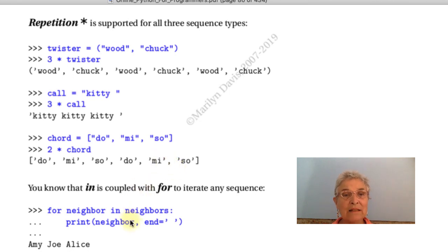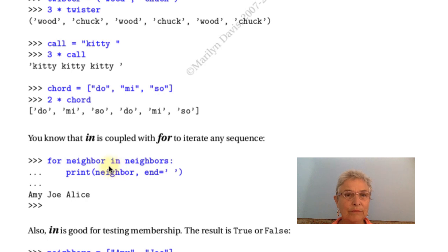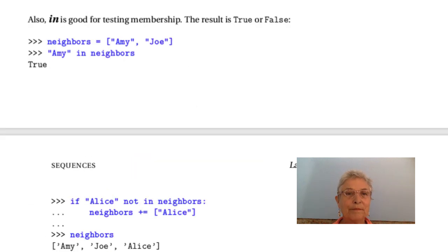We have seen, for many times, since almost the beginning, that for and in work together to take you through a sequence. For neighbor in neighbors, we print our neighbor. At this, we don't know. Is that a tuple? Or is that a list? All we know is that we're printing out one element at a time. These neighbors are definitely a list.